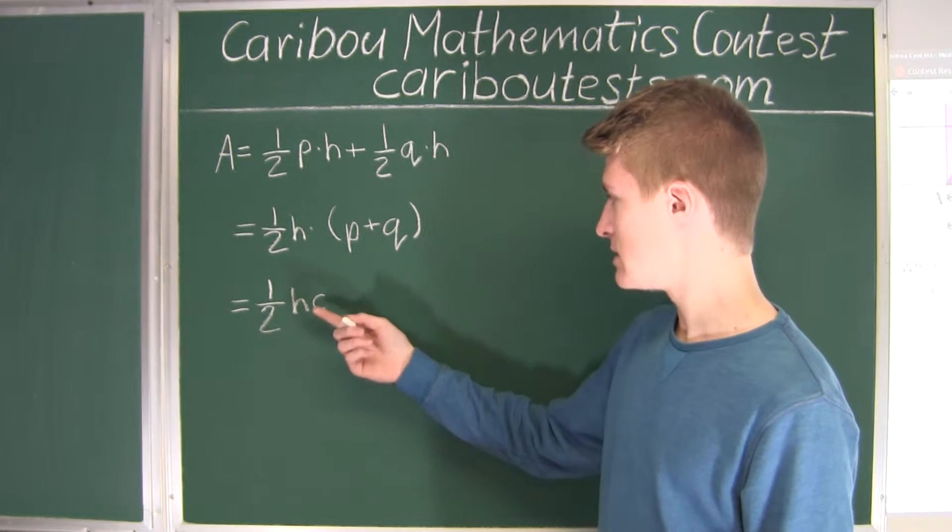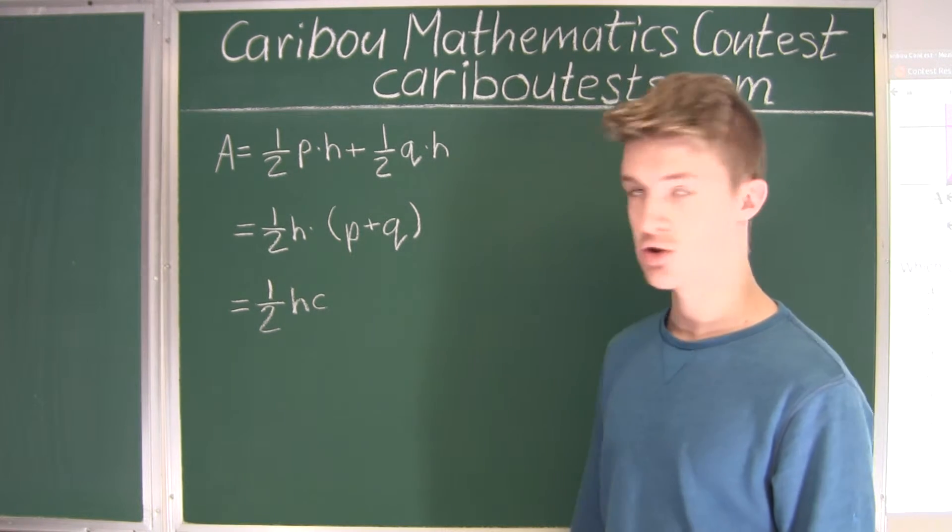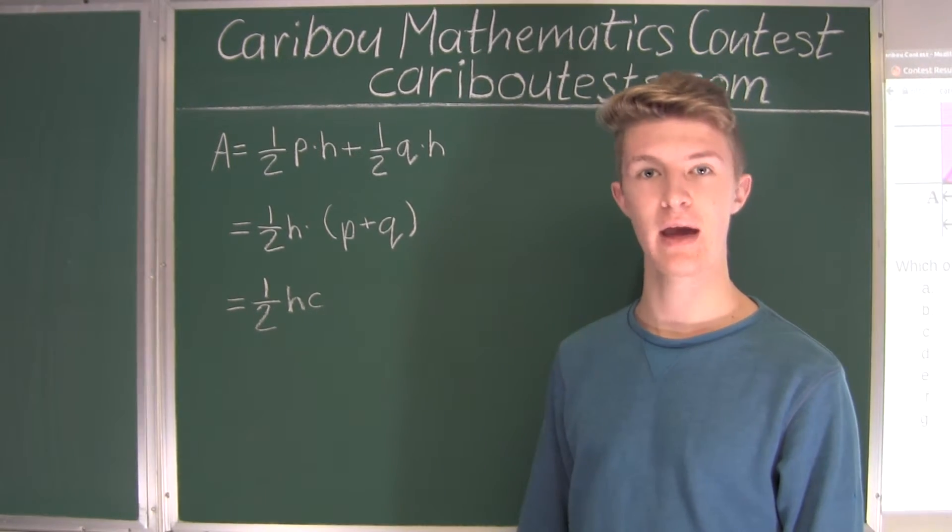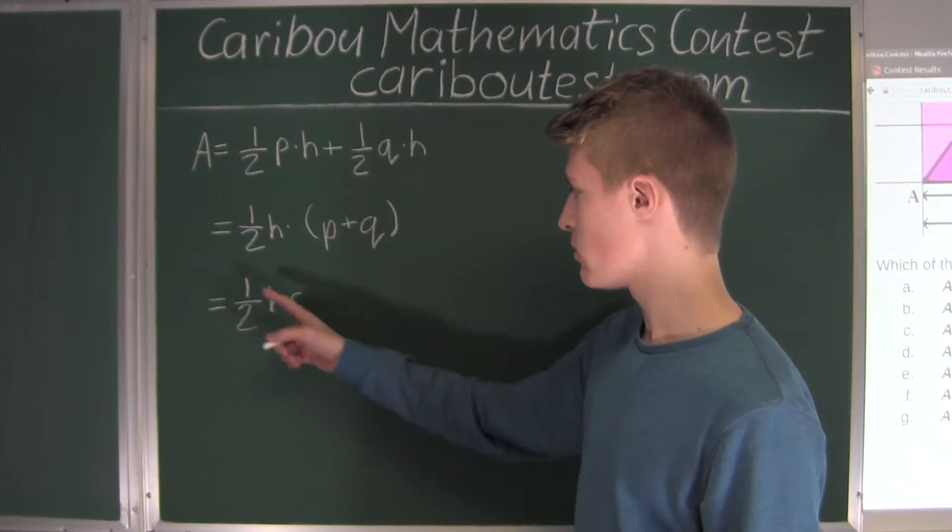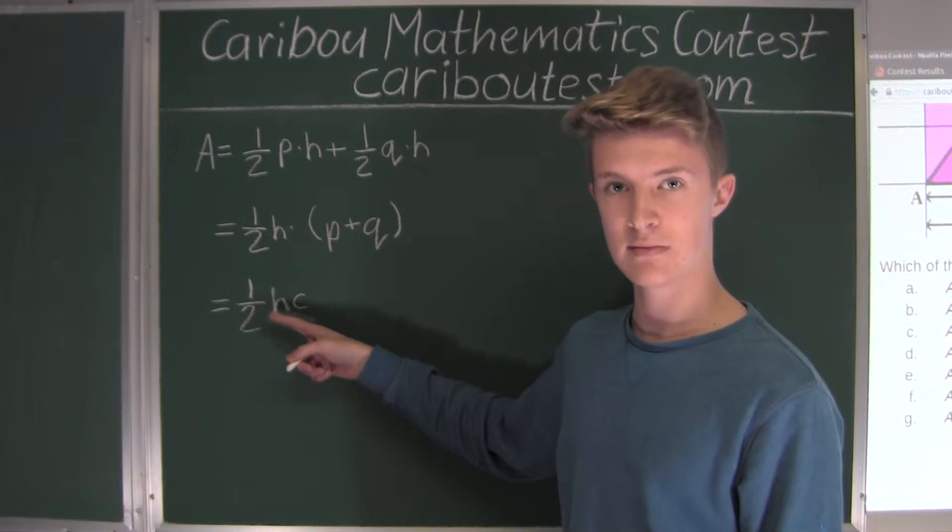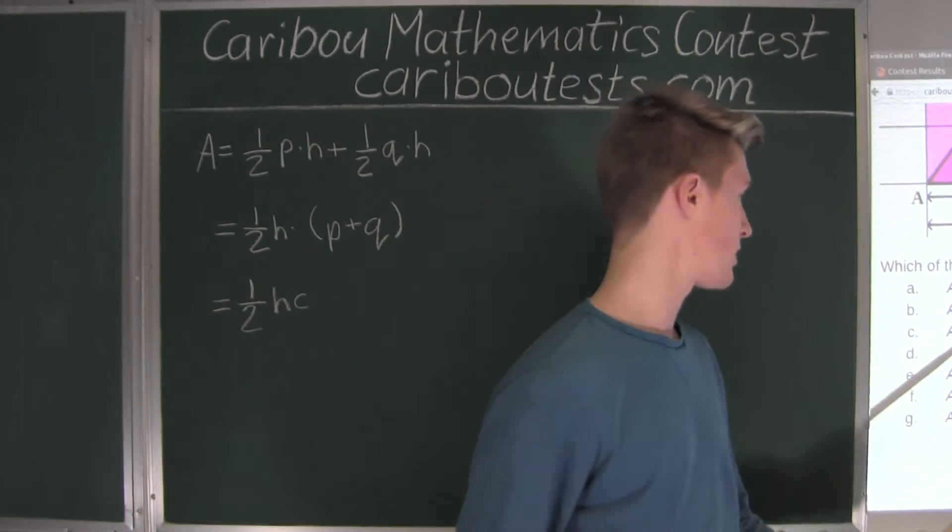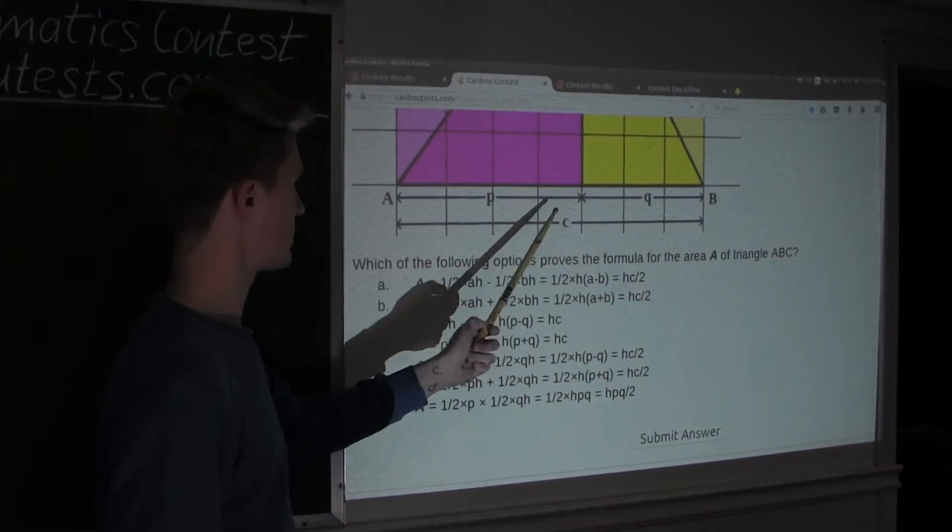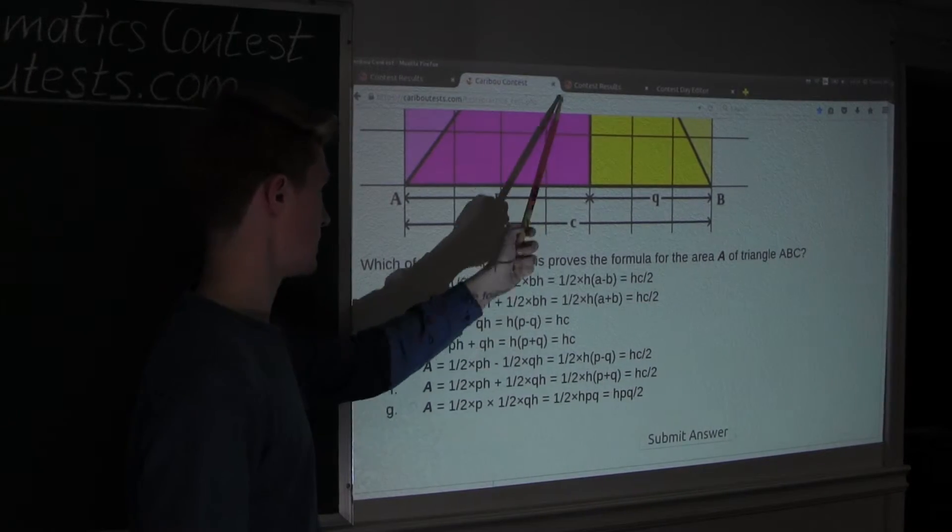And now this is known as the formula of a triangle, which would be 1 over 2. Formula for the area of a triangle, which would be 1 over 2 times one of the side lengths multiplied by its corresponding height. Where here, the side length is C and the corresponding height would be H.